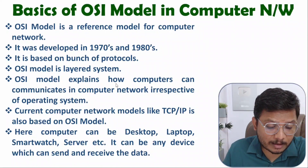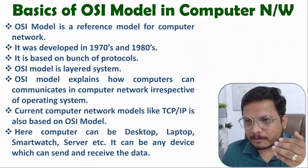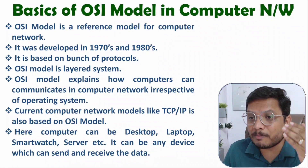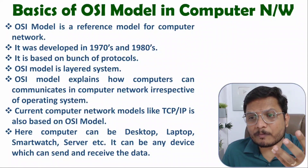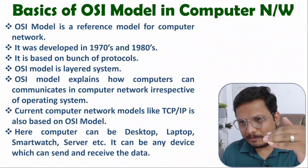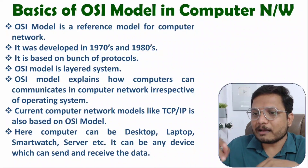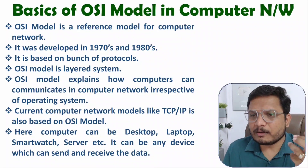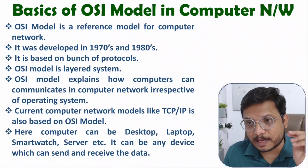OSI model explains how computers can communicate inside a computer network irrespective of operating system. There are varieties of operating systems — Windows, Mac (Macintosh), Linux — and with different computers the operating system changes. But OSI model is well-defined, so by OSI model we can communicate with any computer regardless of operating system. A person with a Mac OS can send data to a person with Windows or Android — there are no boundaries based on operating system.